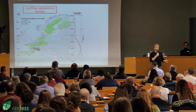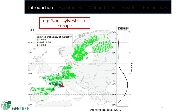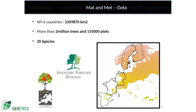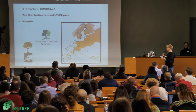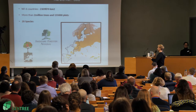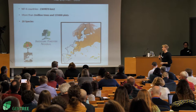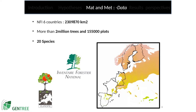We start to understand a bit how it is going in Europe — here you have a map of mortality of Pinus sylvestris — but we need to understand better how it works with many species. So I've been working with national forest inventories data from six countries: Spain, France, Wallonie, Germany, Finland, and Sweden. I've worked with more than two million trees and I've modeled mortality in 20 different species.